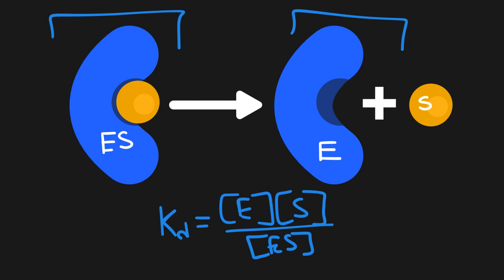As a whole, the higher the KD value, the more dissociated the enzyme and the substrate are, or the lower the affinity they have for one another. This makes sense because as the KD value increases, the numerator of this fraction must also be increasing — meaning the concentration of the enzyme times the concentration of the substrate is increasing, indicating more dissociated enzyme and substrate.